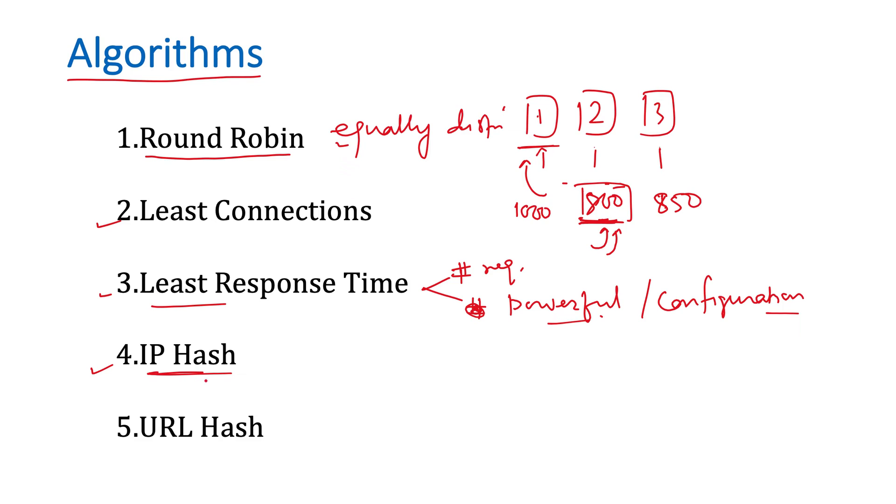The fourth algorithm is IP hashing. Depending on the IP from where the request is coming, we can route it to different servers. For some IPs we may want to give priority. Depending on the IP address, we can create different hash functions and serve the request differently. The fifth method is URL hash. Depending on which URL a request is coming from, like .in or .com or .co.in or .co.uk, depending on the URL hash you can distribute the load to different servers.